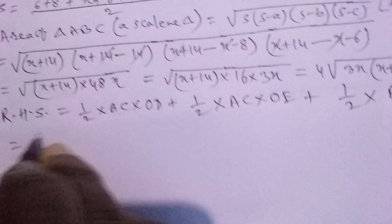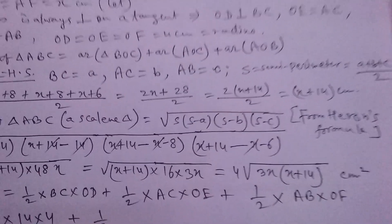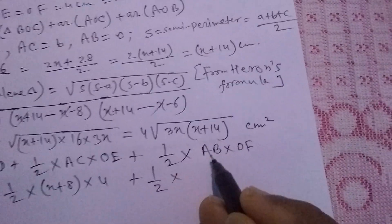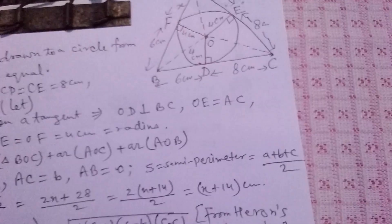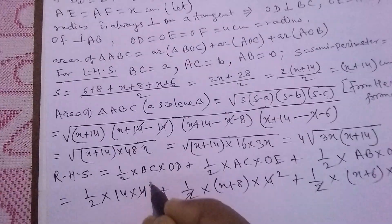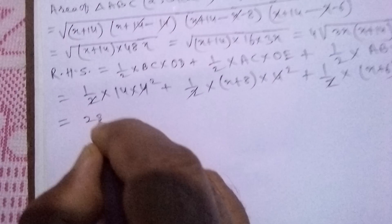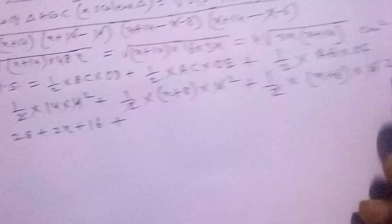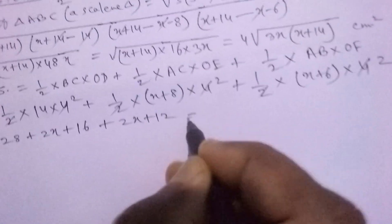Putting values: BC equals 6+8 equals 14, and OD is 4. Plus (1/2)(X+8)(4) plus (1/2)(X+6)(4). Simplifying, we get 28 plus 2X+16 plus 2X+12.